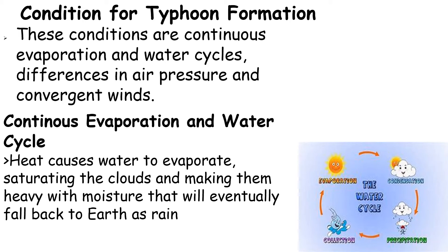The conditions for typhoon formation are: continuous evaporation and the water cycle, differences in air pressure, and convergent winds. Heat causes water to evaporate continuously; the clouds become saturated — you can notice the clouds change from white to dark because they are already saturated. Once they condense, they start to precipitate and rain falls.